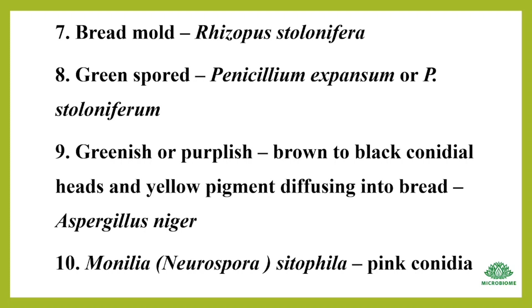Greenish or purplish, brown to black conidial heads and yellow pigment diffusing into the bread is characteristic of Aspergillus niger. Neurospora (Monilia) sitophila produces pink conidia on bread.